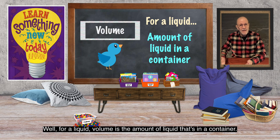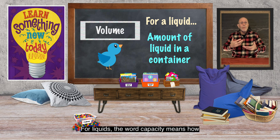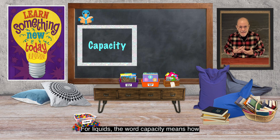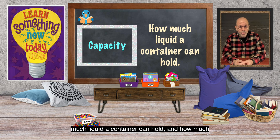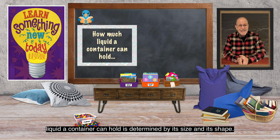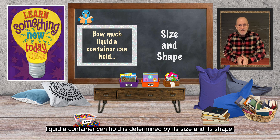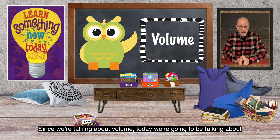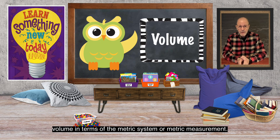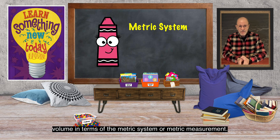For liquids, the word capacity means how much liquid a container can hold, and how much liquid a container can hold is determined by its size and its shape. Since we're talking about volume today, we're going to be talking about volume in terms of the metric system, or metric measurement.